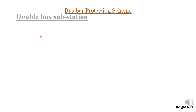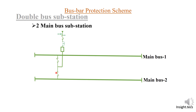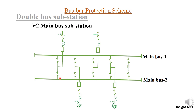Now, the double bus substation — also called the two main bus substation — has Bus 1 and Main Bus 2 with a feeder arrangement. Selector isolators are provided that help you select Bus 1 or Bus 2, similarly for the transformers as well. For the two bus substation the main component is the bus coupler, which connects the two buses.